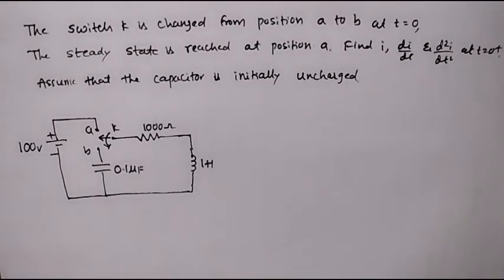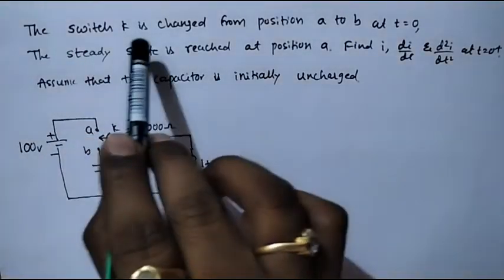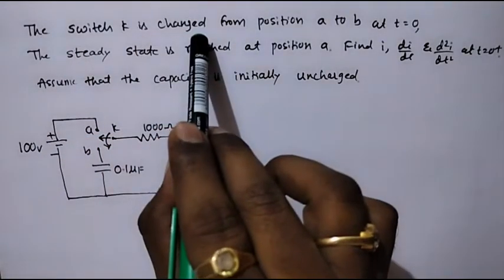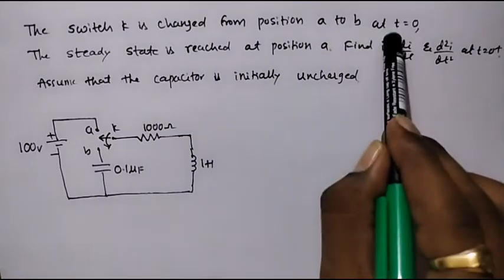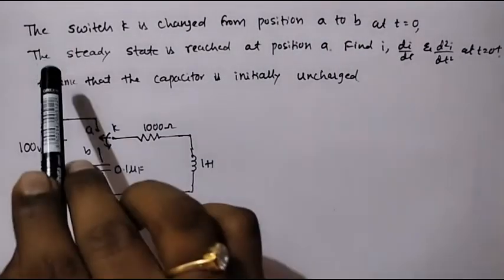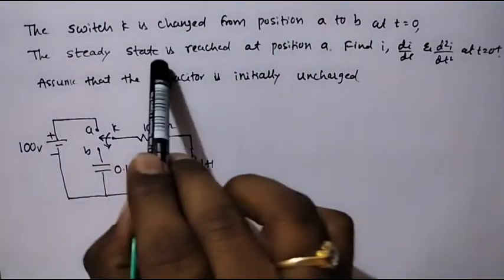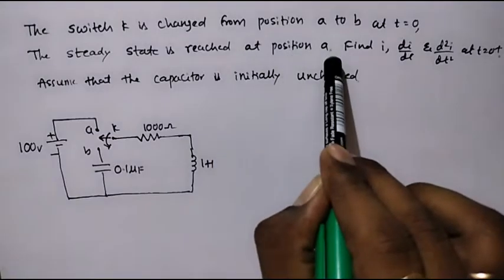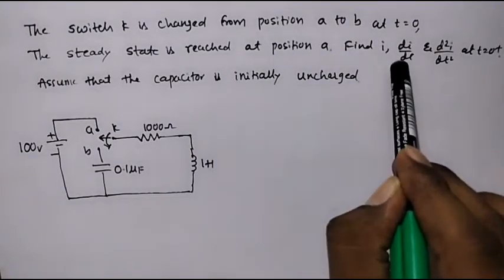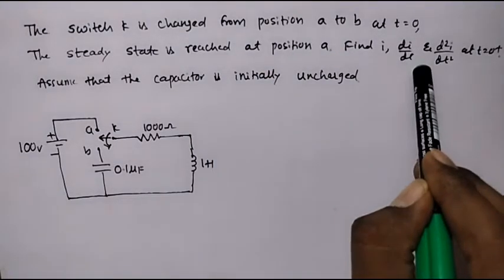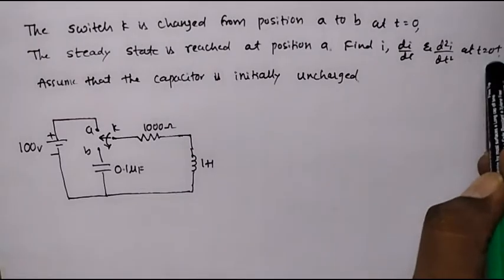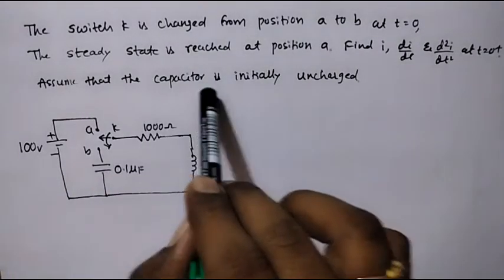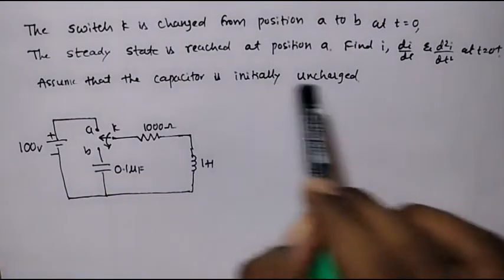Let us take one example on initial conditions. The switch K is changed from position A to B at t equal to 0. The steady state is reached at position A. Find i, di by dt, and d square i by dt square at t equal to 0 plus. Assume that the capacitor is initially uncharged.